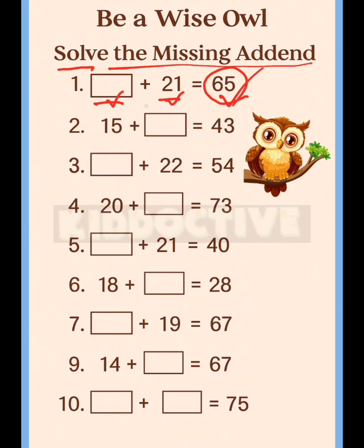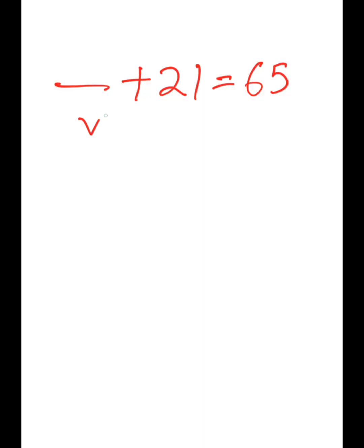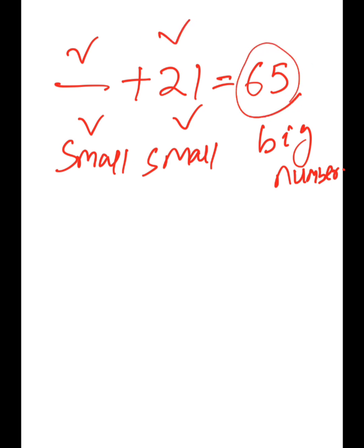The question is dash plus 21 equals 65. As I said, when we add two small numbers, we get the big number. Always remember that these two are smaller than the big one.